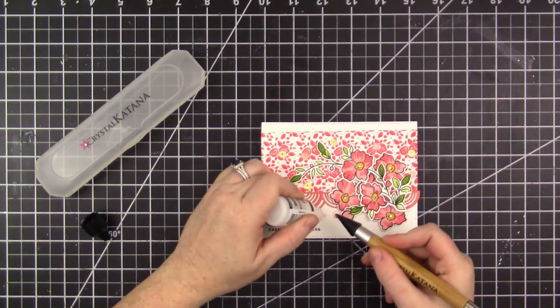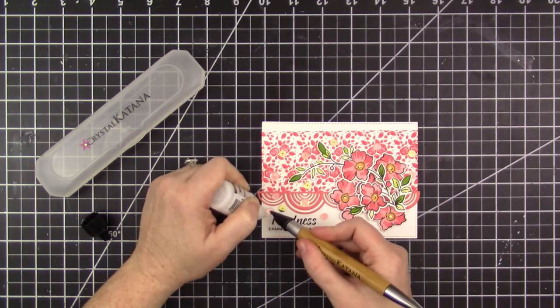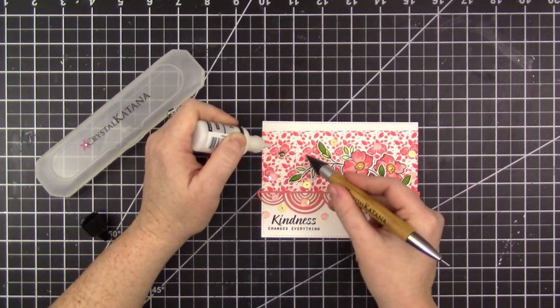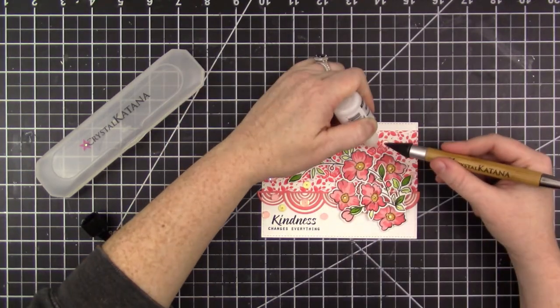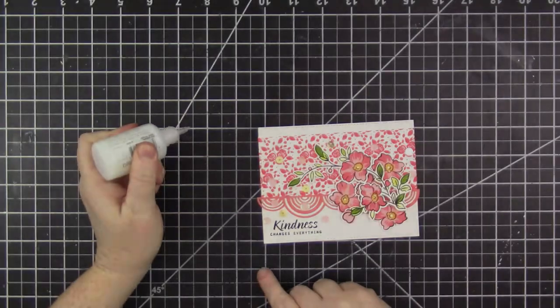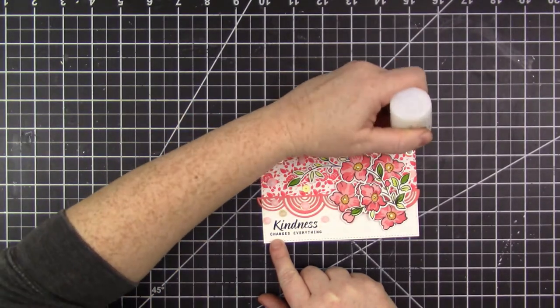The last thing I do is add some sequins. I've totally been in a sequins phase lately, so they are in a lot of the cards I'm making right now. I do that with some Matte Medium and my Crystal Katana multimedia pickup tool. I'll adhere them, and of course I do a little drop of the clear Nuvo drop over the top of them.